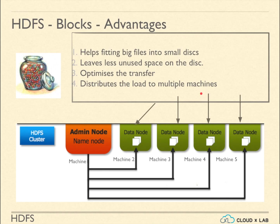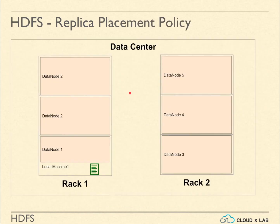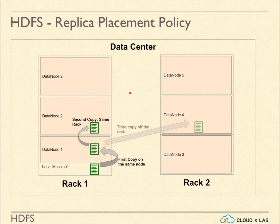Let us understand HDFS replication. Each block has multiple copies in HDFS. A big file gets split into multiple blocks and every block gets stored to 3 different data nodes — this is called replication. The default replication factor is 3. Please note that no two copies will be on the same data node. Generally, the first two copies will be on the same rack and the third copy will be off the rack.